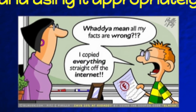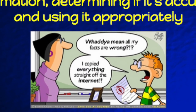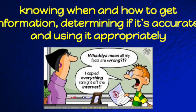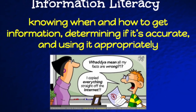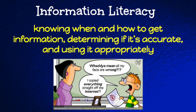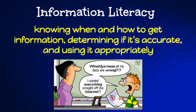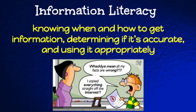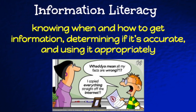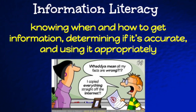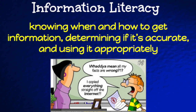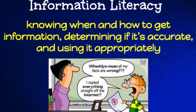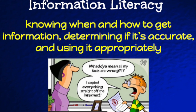The seventh theme is information literacy, which is the ability for a user to understand when information is needed and how to go about getting the information, determining if it's accurate, and using it appropriately. Information is so readily available that our job as educators has changed from knowing all to helping students decipher all. Empowering students to search appropriately and honor their sources is a step in the right direction.